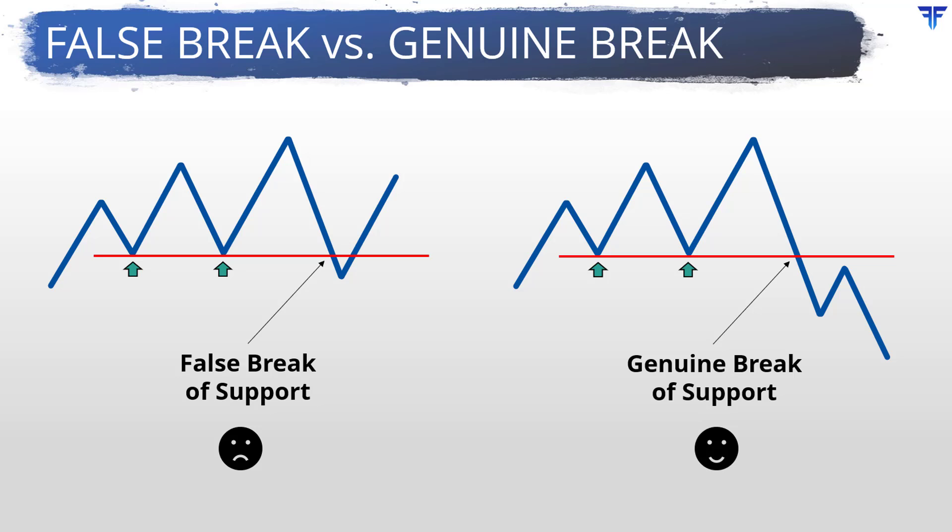Now look at this line chart. Again, after holding twice, notice that the support broke the third time it was tested. This time, however, see that the sellers remained strong, causing the price to continue heading lower post the support break. This was the case of a genuine support break.